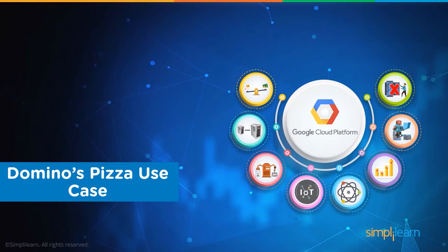Now let's look at the Domino's Pizza use case. While discussing these features, there are huge lists of services such as Compute Engine, storage, Bigtable, Dataproc, and so on. Before we get into the Domino's Pizza use case, let me show you the Google Cloud page where you can look at different services.